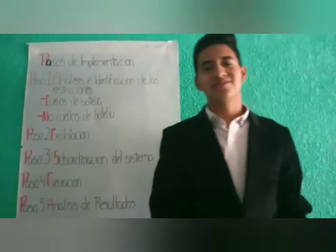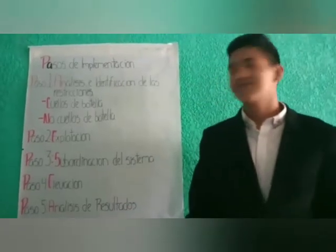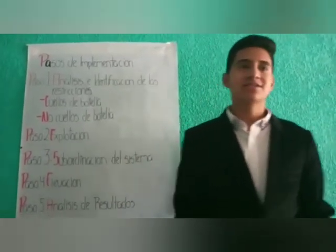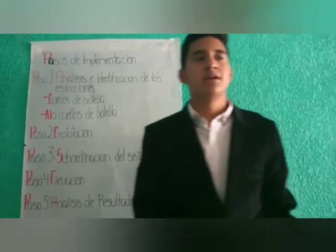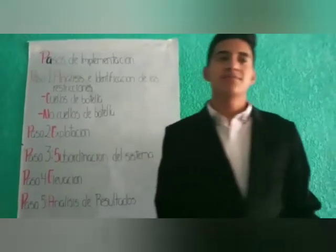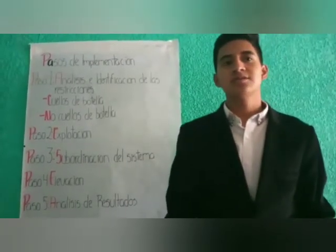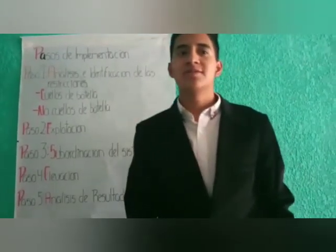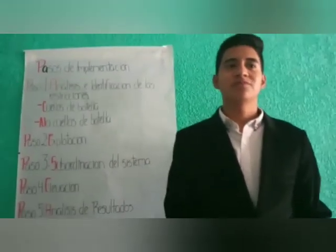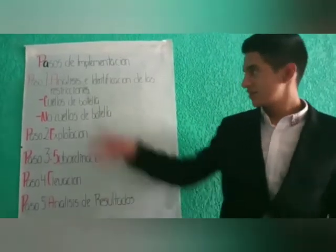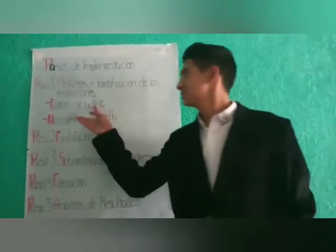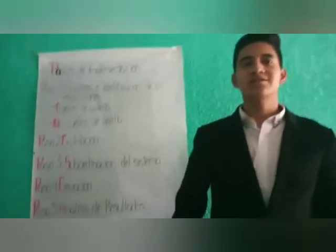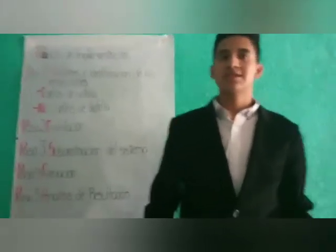Buenos días, me presento, soy Excel Núñez y les voy a mostrar los pasos de implementación. El primer paso es el análisis e identificación de las restricciones. En este paso se identifican los elementos restrictivos del proceso, su impacto en la productividad y la capacidad utilizada en tiempo y forma del producto. Existen dos factores importantes: el cuello de botella, que es un recurso cuya capacidad es igual o inferior a la demanda ejercida sobre él.